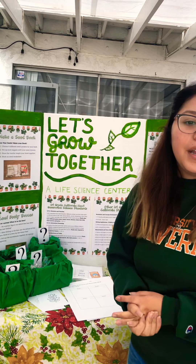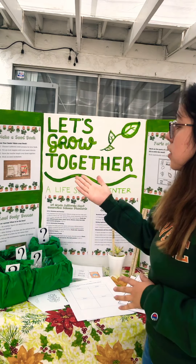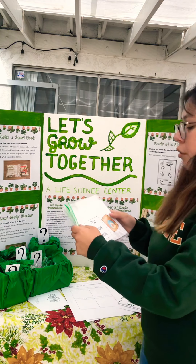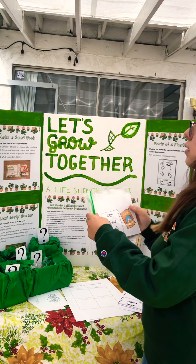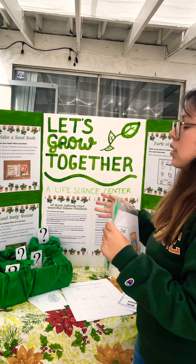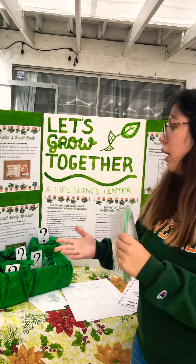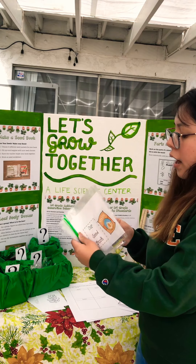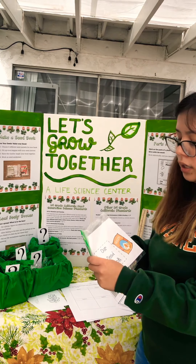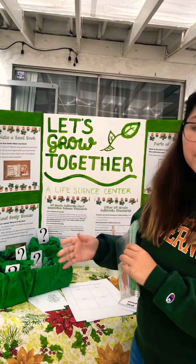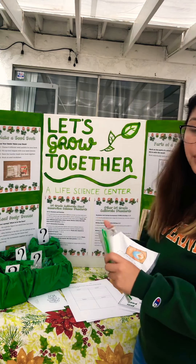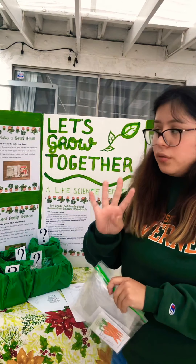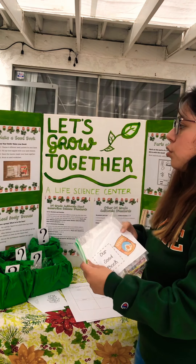Looking at the first activity I have planned, it's called Make a Seed Book. Students will make their own book with different seeds in it so they can evaluate the differences between seeds and how they grow — how, regardless of all starting off fairly small, they can each grow into something very different. Students will choose four different seed packets from a variety available, then fill their Ziploc baggies with their seed choices.